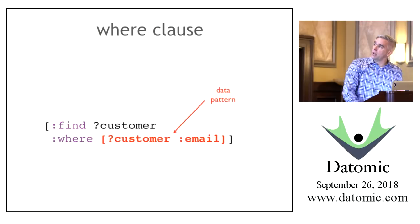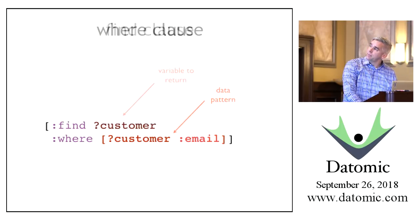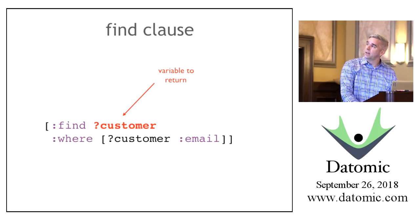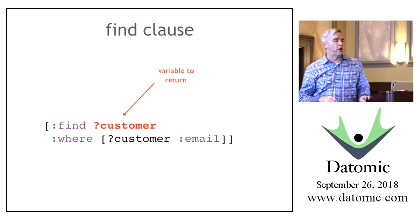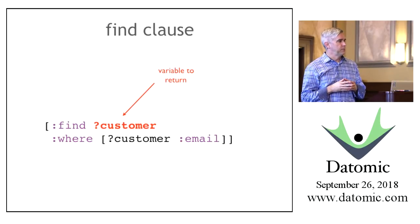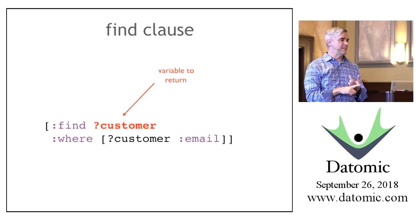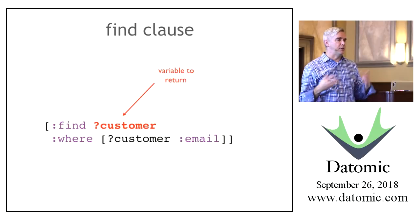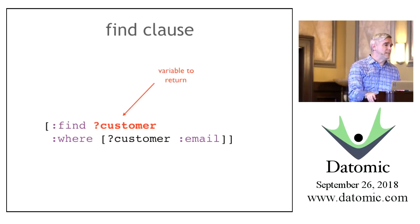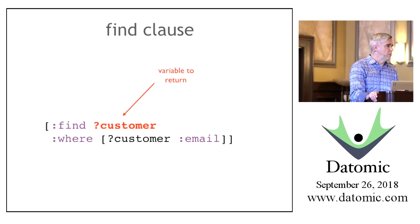These data patterns are plugged into a where clause, and you specify which variables to return in a find clause. Why not return all variables? There are times where you don't care—there are internal variables that you joined through to get some piece of information but aren't interested in returning. So we specify which ones to get.